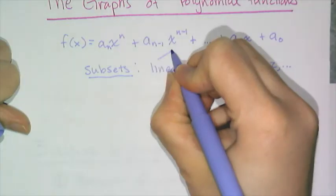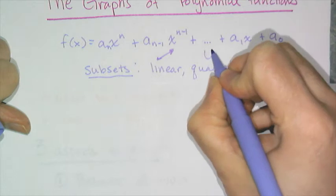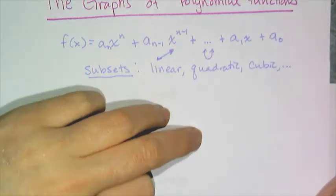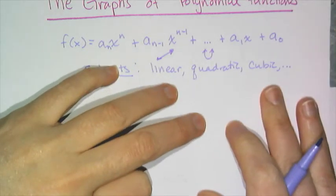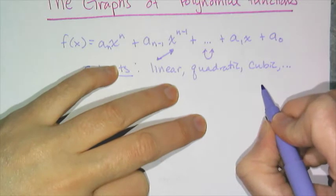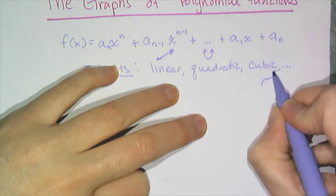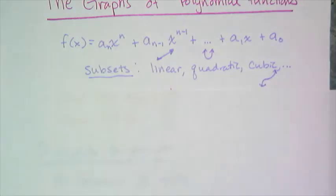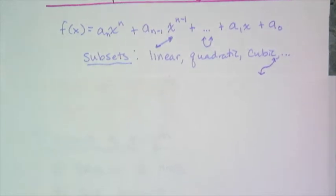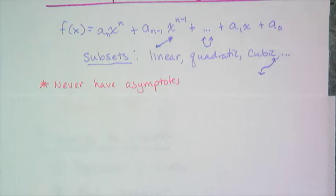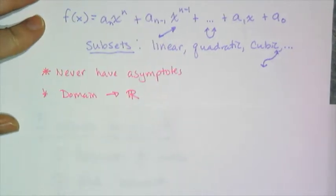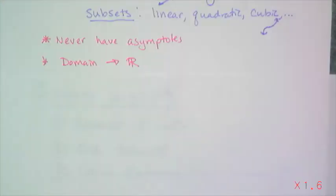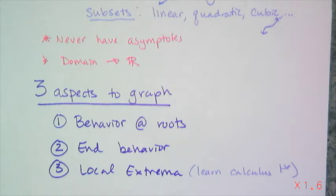The parent linear looks like a line, the parent quadratic is the parabola, and the parent cubic — y equals x cubed — looks a little something like that. A few things to remember about polynomial functions and their graphs: they are never going to have an asymptote, and the domain for all these functions is going to be all reals. When we talk about the graphs, there are really three things we need to explore: behavior at roots, end behavior, and local extrema.